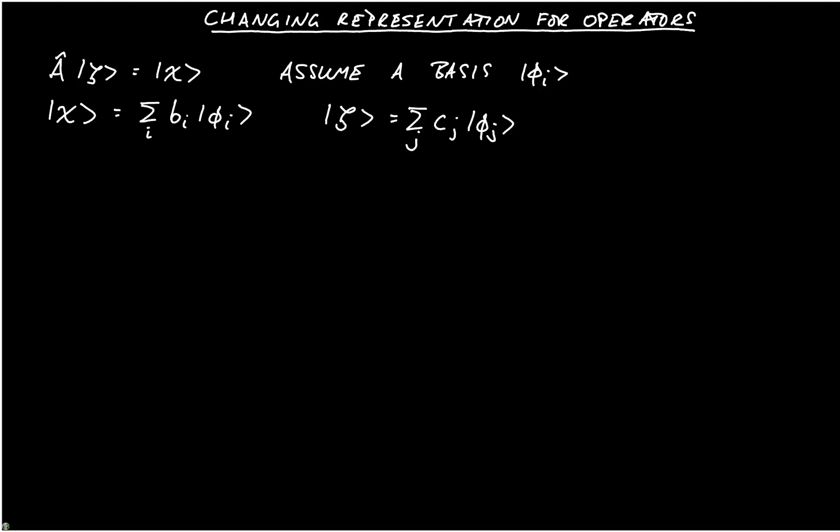And we can write the original equation as a vector matrix equation. So we would have the matrix A, remember the double underline means it's a matrix, acting on the vector c, is equal to the vector b, where the elements of the matrix A_ik are given by bra phi_i A hat ket phi_k.